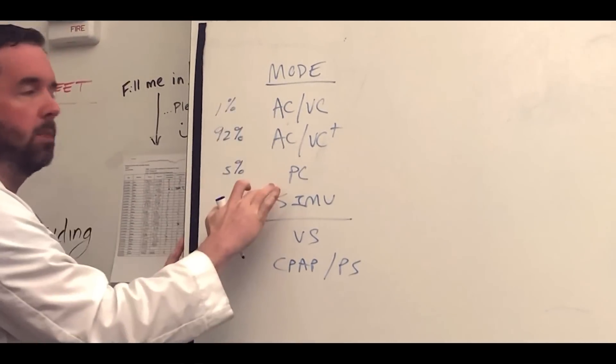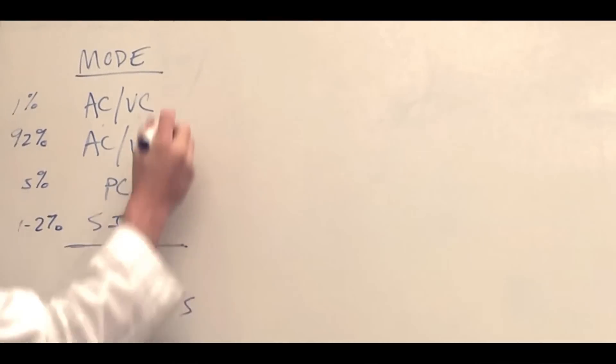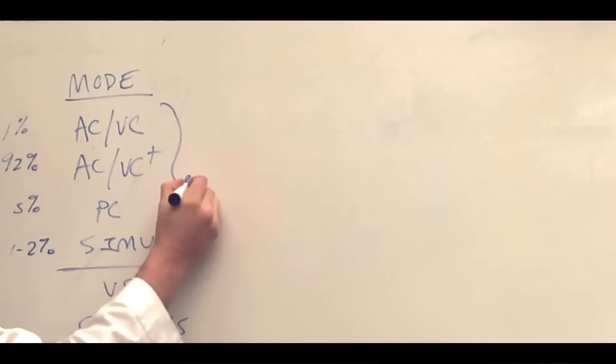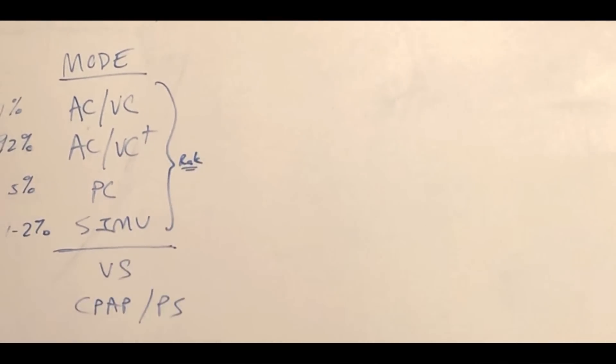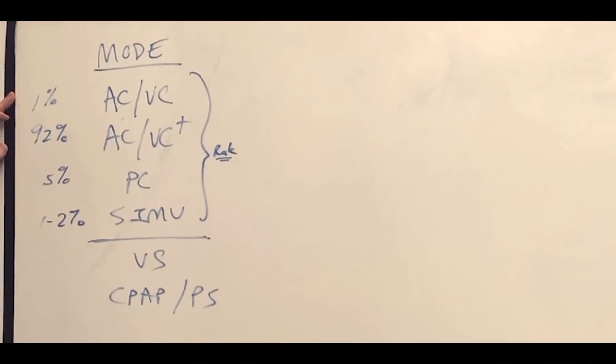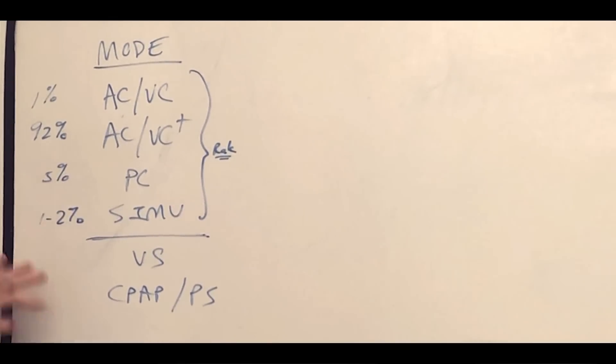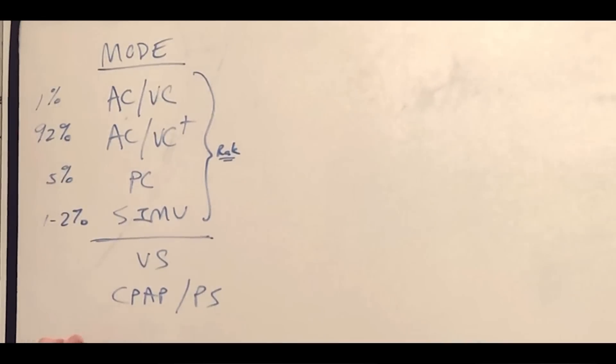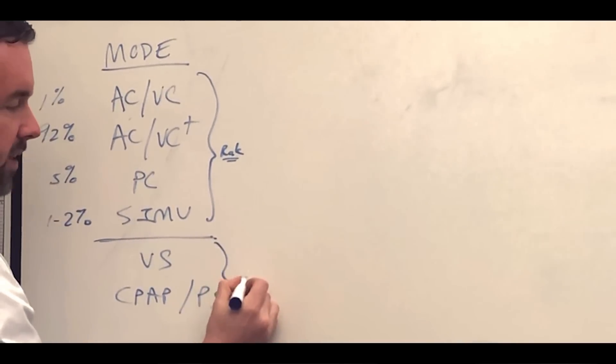These modes up here that I separated with the line, these all involve setting a rate on the vent. So in addition to the mode, you're going to set a rate. The next two, volume support and CPAP pressure support, these are called spontaneous modes.